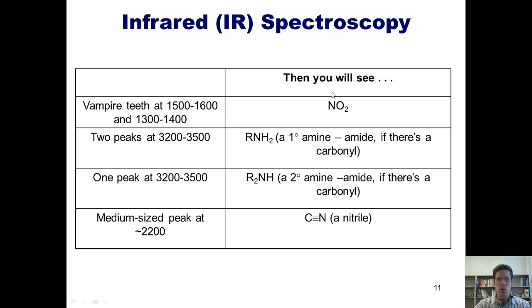Here are some others that I've shown other students. If you have an NO2 in your molecule, you'll typically see vampire teeth showing up, one between 1500-1600 and the other between 1300-1400. If you have a primary amine or an amide with a carbonyl, you'll see two peaks between 3200 and 3500. A secondary amine or amide has one peak that shows up 3200 to 3500. And a nitrile has a medium-sized sharp peak around 2200. I'll now show you examples of all of those different molecules.